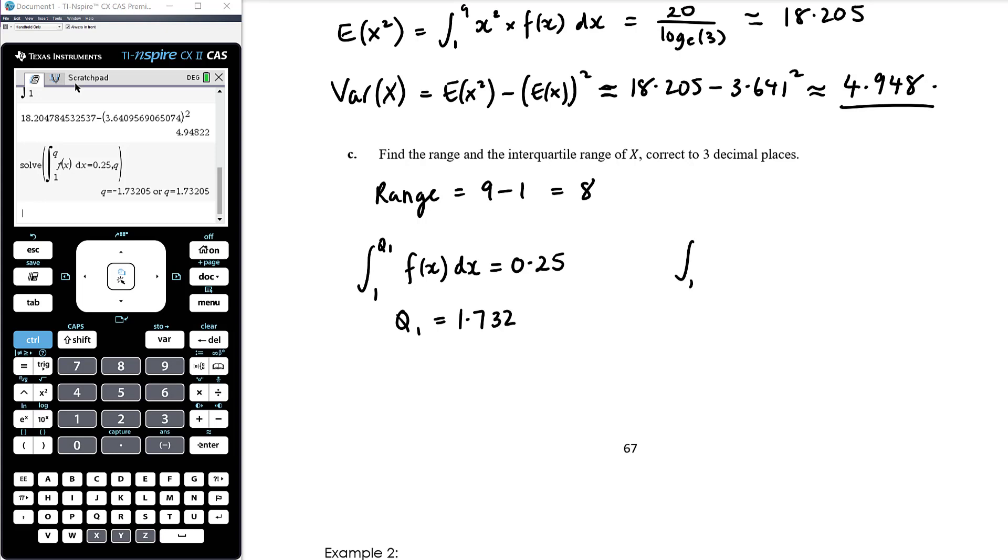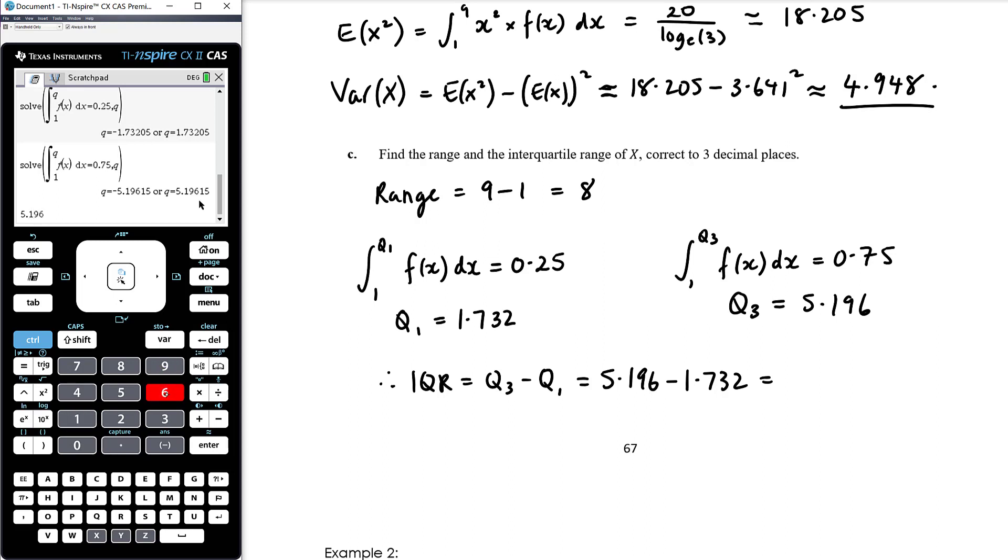And for q3, it's going to be integral from 1 to q3 of f of x is 0.75, so it's the 75th percentile. So I can just edit this same calculation and make it up to 0.75. And again, it has to be between 1 and 9, so that is 5.196. And so therefore the interquartile range is q3 minus q1, which is 5.196 minus 1.732. So I'm going to use as many decimal places as I can see there. I'm just going to retype it though. 5.19615 take away 1.73205. OK, so to three decimal places, that is 3.464.